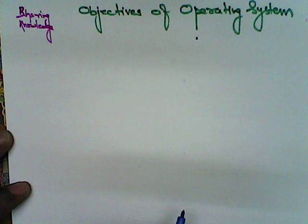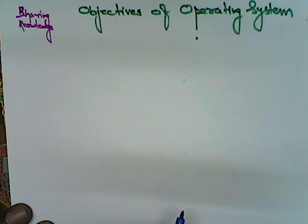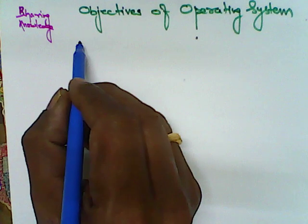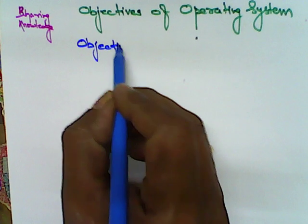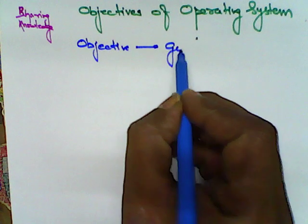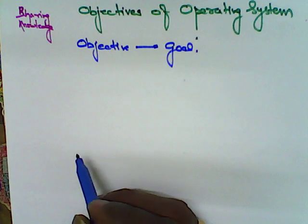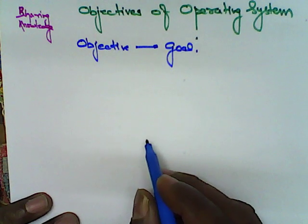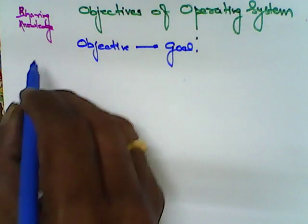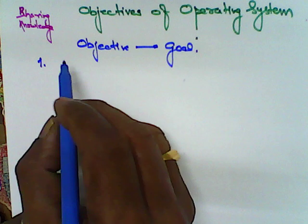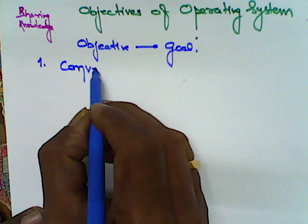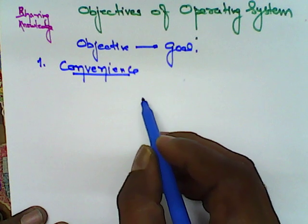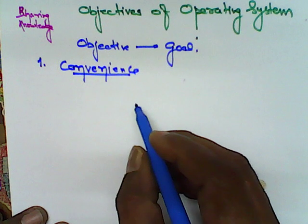Dear students, today I am going to discuss objectives of operating systems. Objective means something like we say it as your goal for which you are carrying out certain activities. So the objectives of the operating systems - the very first point we consider is convenience. Now what exactly convenience means is that while we are operating say a computer or a mobile...